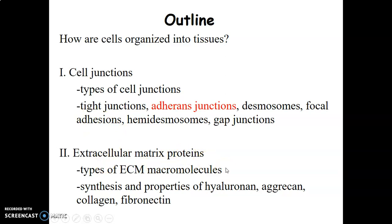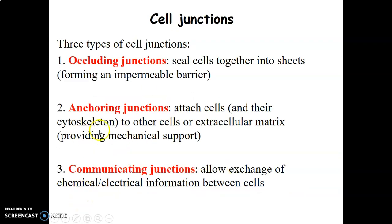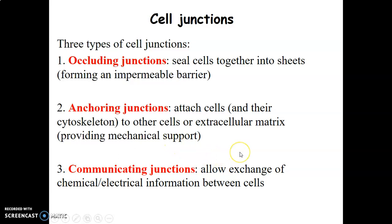Outside the cells we have extracellular matrix containing macromolecules synthesized by the cell, such as hyaluronan, aggrecan, collagen, and fibronectin. Cell junctions mainly form the lateral specialization of cells. Occluding junctions seal cells together into a sheet, forming an impermeable barrier. Anchoring junctions attach cells to other cells or the extracellular matrix, providing mechanical support. Communicating junctions allow exchange of chemical or electrical information between cells.